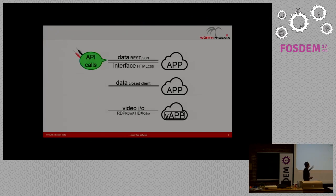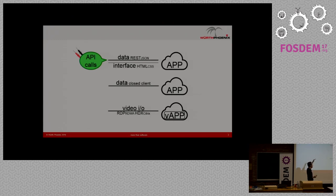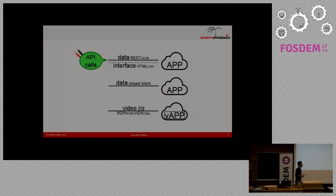We have three scenarios. The first one is when you have an open application with an open protocol — it's quite easy to assess the quality of service by calling the open APIs like HTTP. But the other two cases are definitely harder: in the second case we face a closed client with a closed protocol, so custom socket programming.